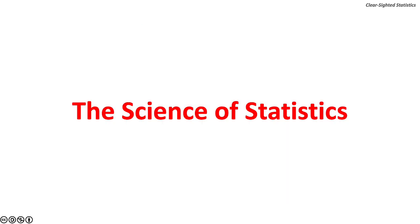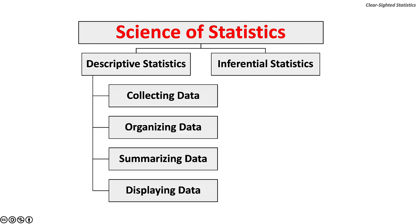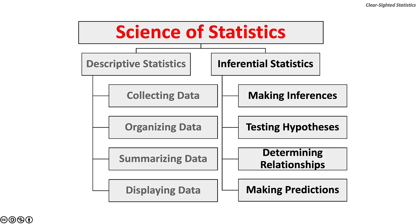The science of statistics is composed of two branches: descriptive statistics and inferential statistics. Descriptive statistics deals with collecting data, organizing data, summarizing data using measures of central location, variation and place, and displaying data with tables, charts, or graphs. Inferential statistics deals with using sample statistics to make inferences about unknown population parameters, testing hypotheses, determining whether different data are related, and making predictions.